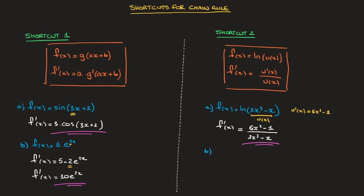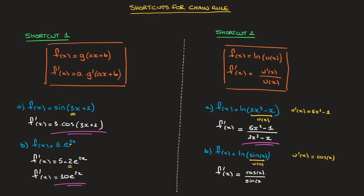As another example, we could try and differentiate f of x which equals ln of sine of x. Once more we can see that we're dealing with ln of some function, sine of x, so we can think of this as ln of u of x. If I call sine of x u of x, then u dash of x equals cosine of x. Thanks to this result, the derivative f dash of x is equal to u dash of x over u of x, which is cosine of x over sine of x. And in fact we could simplify that further to state that's equal to cotan of x. And that's the answer.